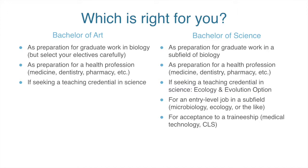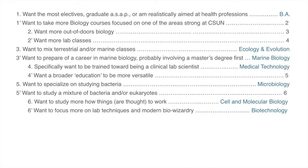For instance, being a microbiologist, an ecologist, or working in a pharmaceutical company. The Medical Technology BS option is more of a training program that prepares students to be clinical laboratory scientists. I've written a decision key here: if you want to maximize electives, shape your own program, graduate as soon as possible, and have a realistic plan for entering a health profession, then the BA is probably for you. If you want more biology courses, specifically lab and field courses focused in a particular area where CSUN is strong, then you probably want one of the BS programs.